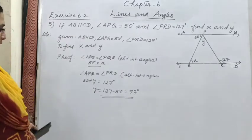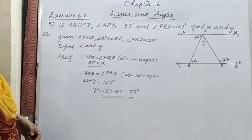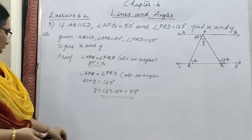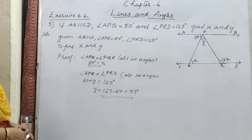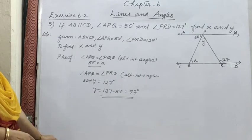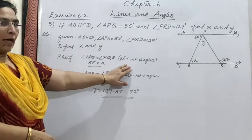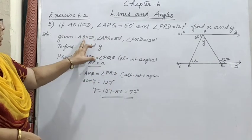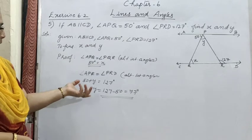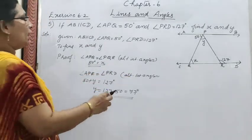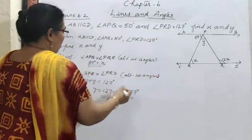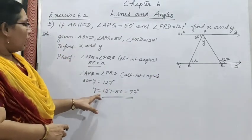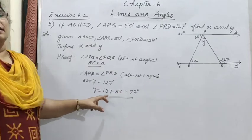To repeat the answer: in both cases we used alternate interior angles. Angle APQ equal to angle PQR — alternate interior angles. Similarly, angle APR equal to angle PRD, since the two lines are parallel. Substituting: 50 plus y equal to 127, so y equal to 77°.